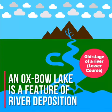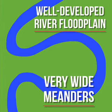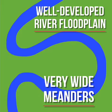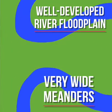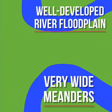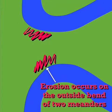An oxbow lake is a feature of river deposition which forms in the old stage of a river. They form on well-developed floodplains where there are very wide meanders with a narrow neck between each bend. Erosion occurs on the outside bend of two meanders.